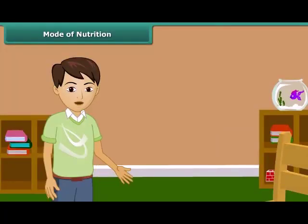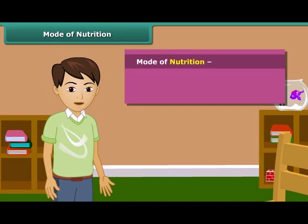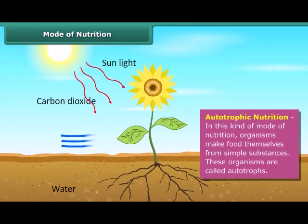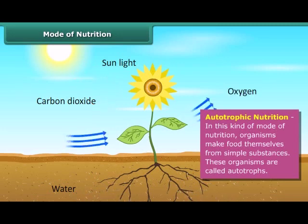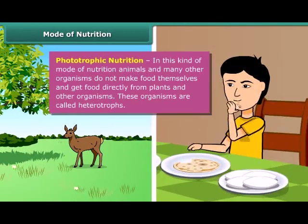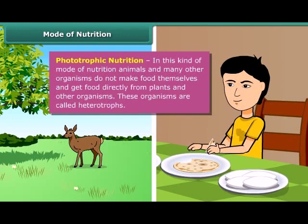Dear friends, now let's know about the mode of nutrition. There are two types of nutrition modes: autotrophic nutrition and heterotrophic nutrition. The mode of nutrition in which organisms make food themselves from simple substances is called autotrophic nutrition, and these organisms are called autotrophs. Green plants are the examples of autotrophs. The mode of nutrition in which animals and many other organisms take in ready-made food prepared by the plants is called heterotrophic nutrition, and these organisms are called heterotrophs. Human, lion, tiger, etc. are the examples of heterotrophs.